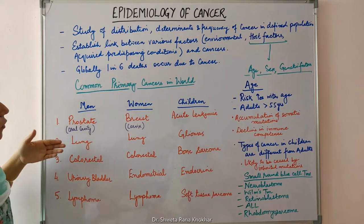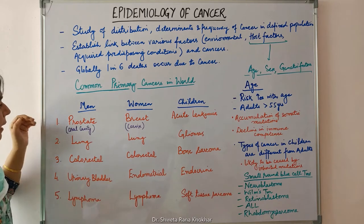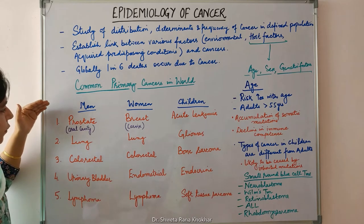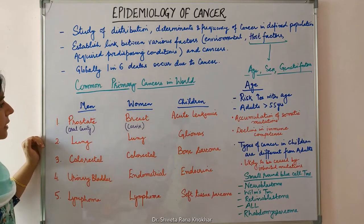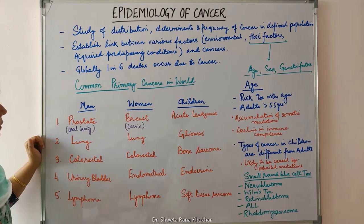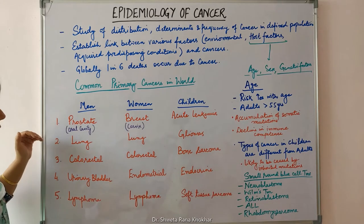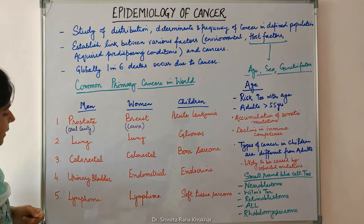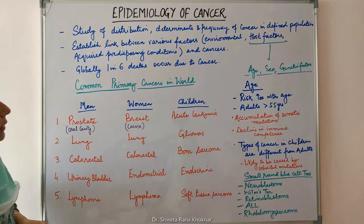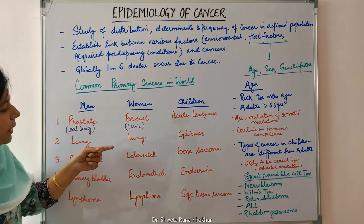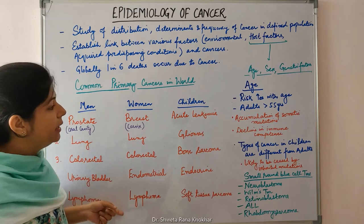These are the five most common primary cancers in the world, listed in decreasing order of frequency in men, women and children. In men, the commonest is prostate cancer, followed by lung cancer, colorectal cancer, urinary bladder carcinoma, and lymphoma. In women, breast cancer, followed by lung cancer, colorectal carcinoma, endometrial carcinoma, and lymphoma.